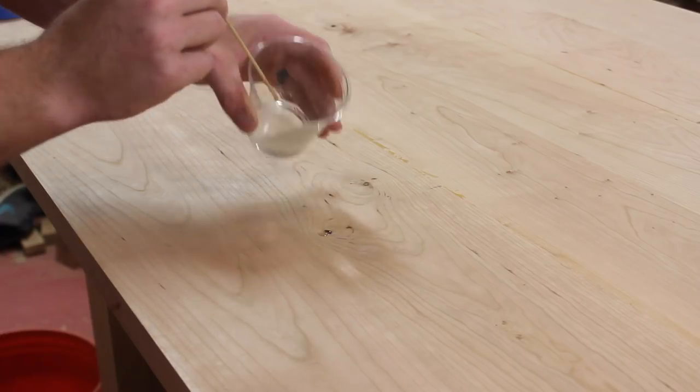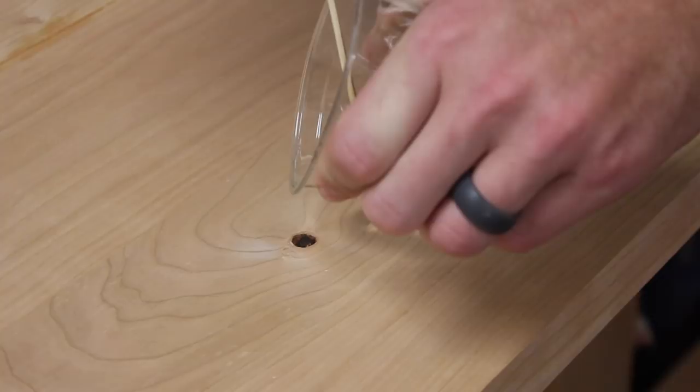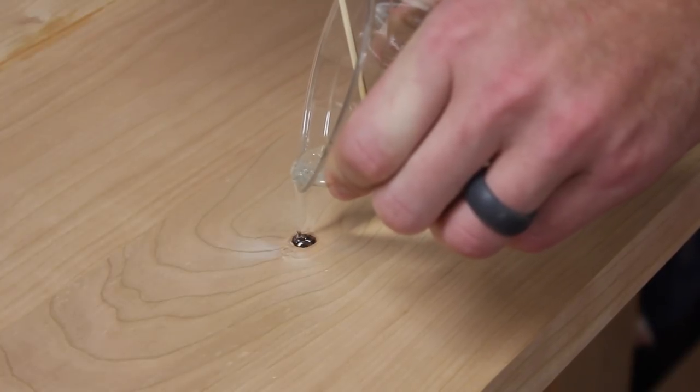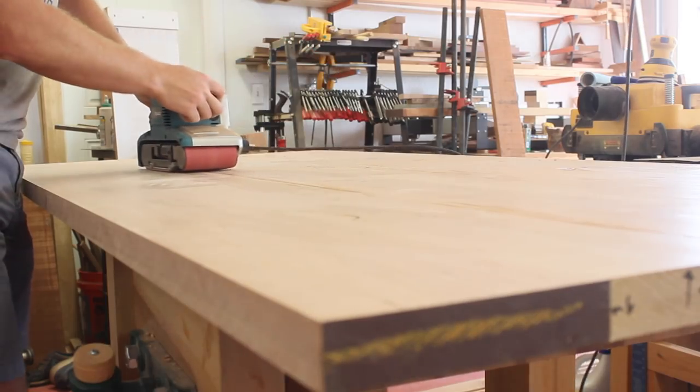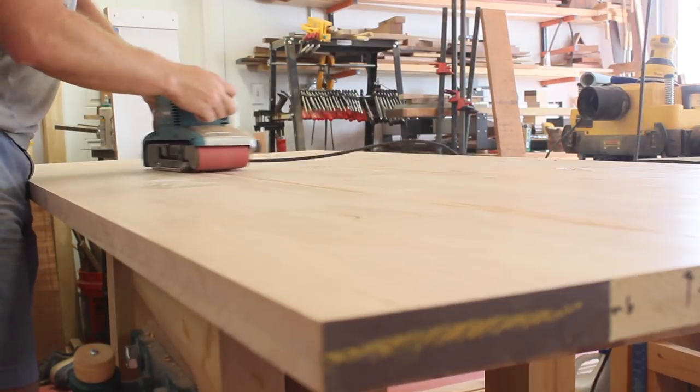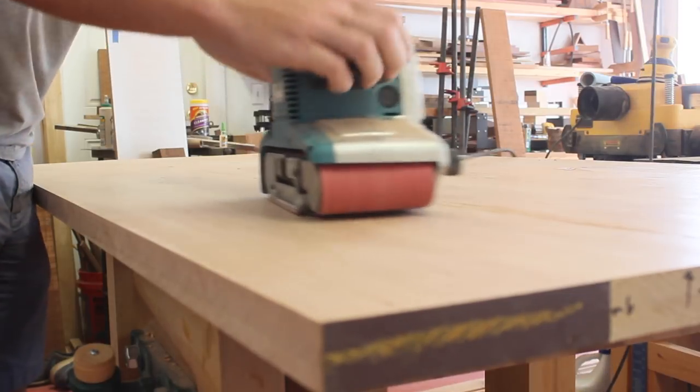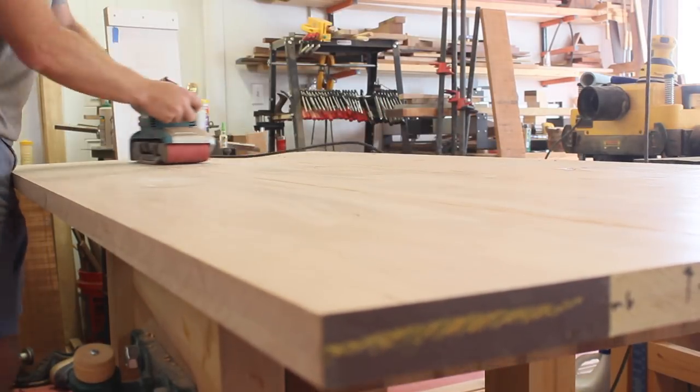There were a couple of holes and defects on the table top, so I added some epoxy and let it cure overnight. I'm using the belt sander and a 50 grit belt to get everything cleaned up. After that, I moved up to an 80 grit belt and then onto the orbital sander.